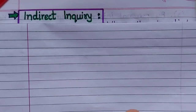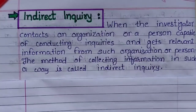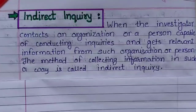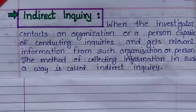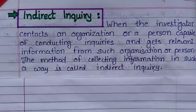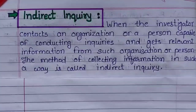Our today's topic is indirect inquiry. When the investigator contacts an organization or a person capable of conducting inquiries and gets relevant information from such organizations or persons, the method of collecting information in such a way is called indirect inquiry. In this method, the investigator himself does not go personally for collecting the information; he contacts some other organization or person who is capable of conducting inquiries and gets relevant information.